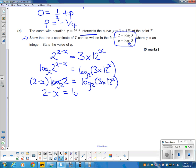Now, if you're confident at rewriting with logs, you can go straight to this step. We've got 2 minus x on the left-hand side. On the right-hand side, we've got a log with a multiply in the middle, which means we can write that as log base 2 of 3 plus log base 2 of 12 to the x.